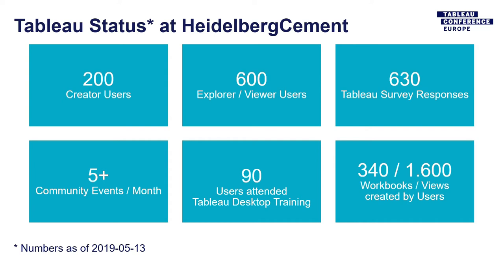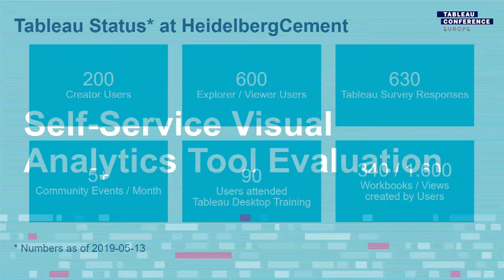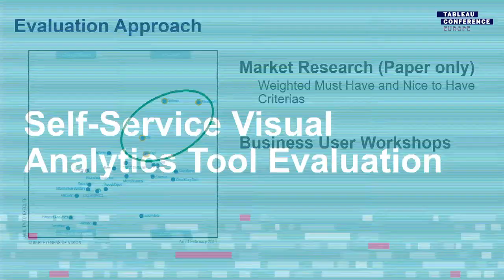These challenges led us to the decision to look for a self-service visual analytics tool, and we started a market evaluation. We looked at Gartner's Magic Quadrant and took the leaders plus SAP, since we were using SAP all the time. We did initial market research for five different products on paper with a weighted list of must-have and nice-to-have criteria, then shortlisted from five products to two.